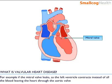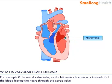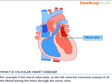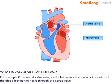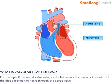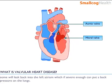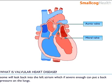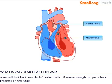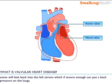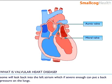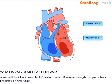For example, if the mitral valve leaks as the left ventricle contracts, instead of all the blood leaving the heart through the aortic valve, some will leak back into the left atrium. If this is severe enough, it can put a back pressure on the lungs.